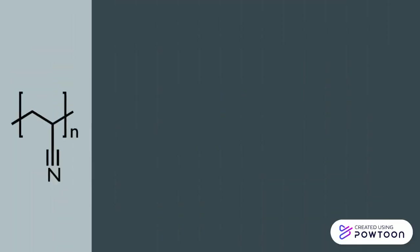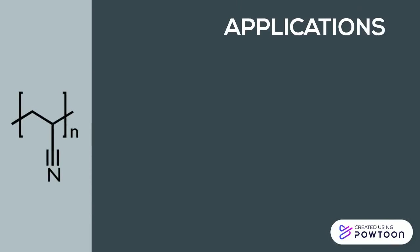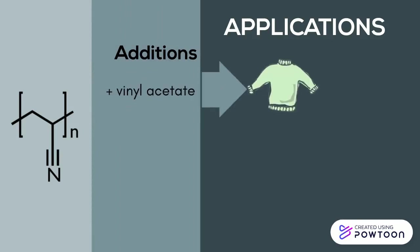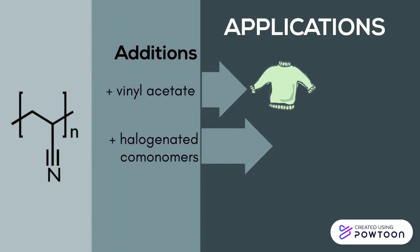Making uses of these properties, polyacrylonitrile is frequently found as the base material at high concentrations for material applications. Some common examples would be adding a bit of vinyl acetate to get the soft but strong fibers used for your clothing. Adding some halogenated co-monomer gives us the waterproof tents or other outdoor gear.